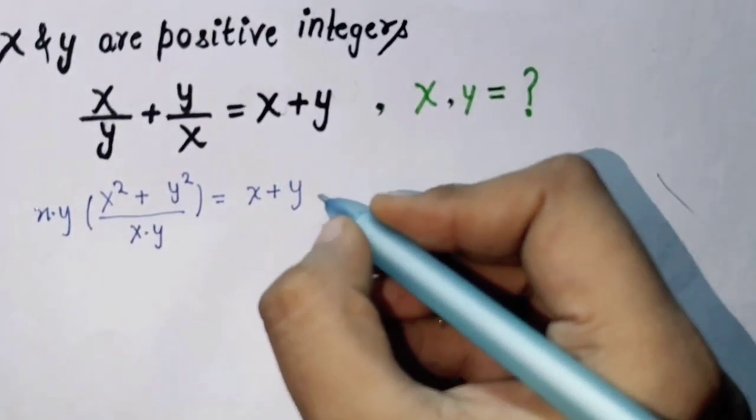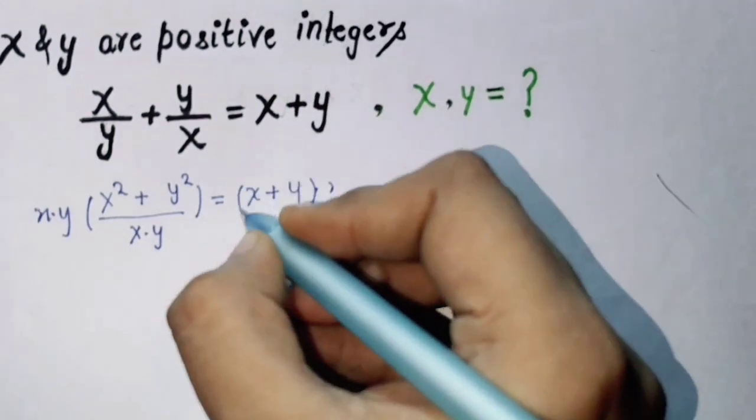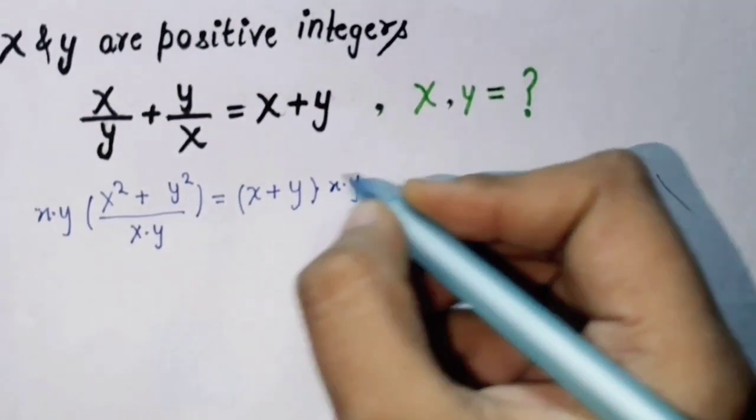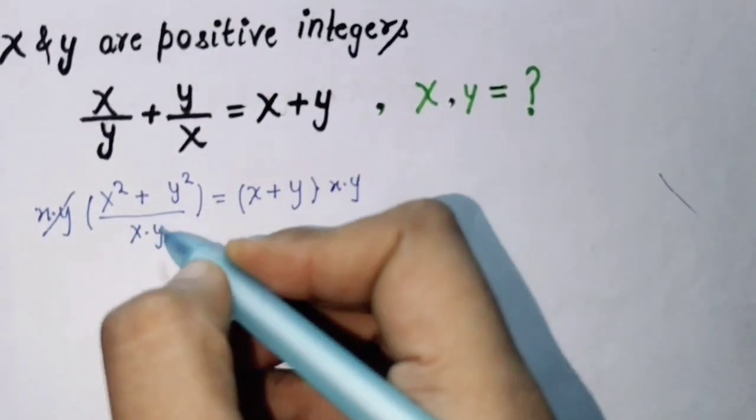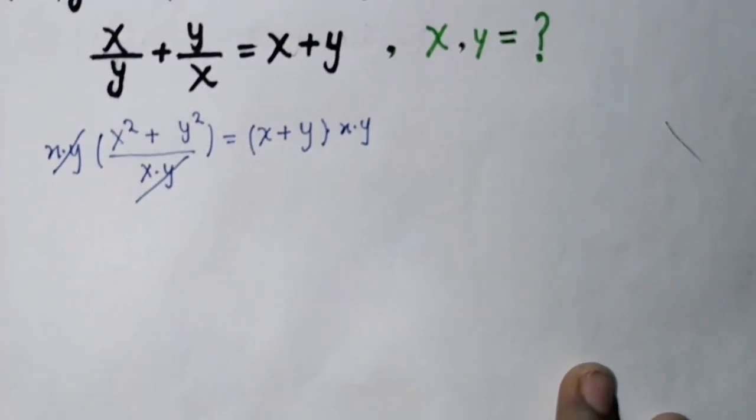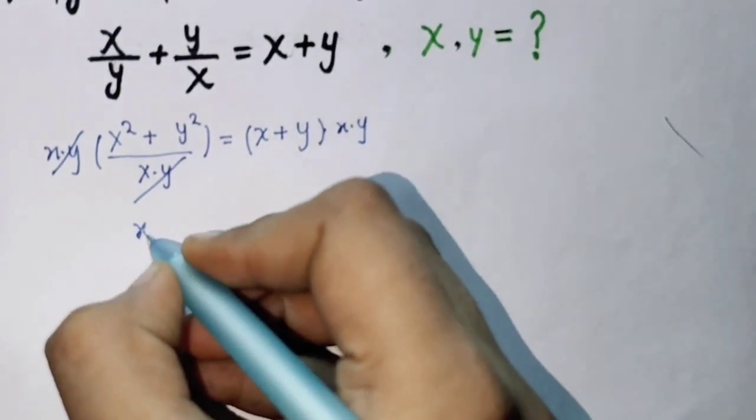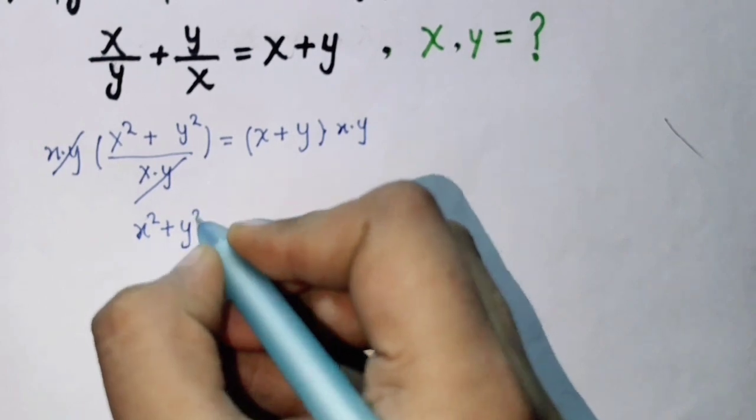This has the same quantity, it will be cancelled. So we get x squared plus y squared equals x y multiply this term.